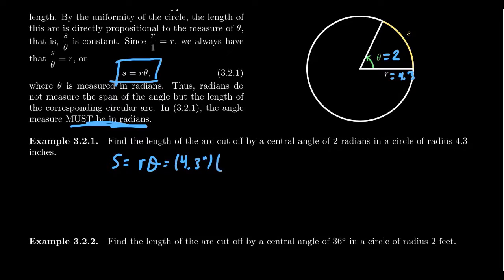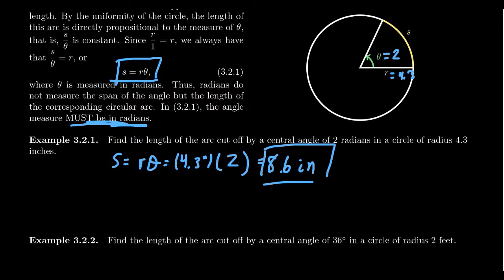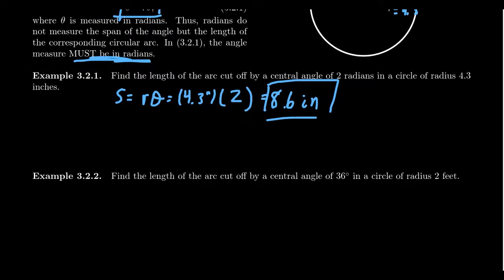And then we get 2 radians here. You don't have to mention the units when it comes to working with radians, because if you mention nothing, then that by default means radian measure. And then a simple multiplication here, 4.3 times 2 is going to equal 8.6 inches, and that's how long the arc will be in that situation. Simple formula, just make sure you're using radians.